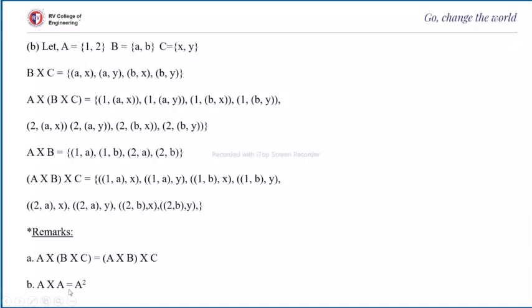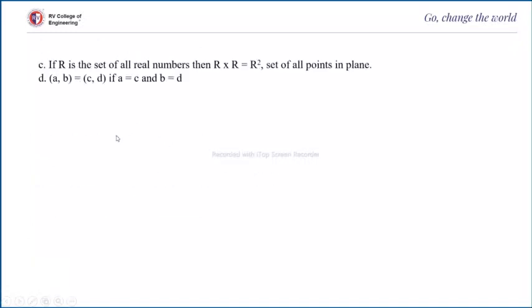Regarding powers of a relation: A cross A is written as A to the power 2, and A cross A cross A is A to the power 3. If R is the set of all real numbers, then R squared equals R×R, which is the set of all points in the plane. And R×R×R, which is R cubed, is the set of all points in 3D space (hyperplane).